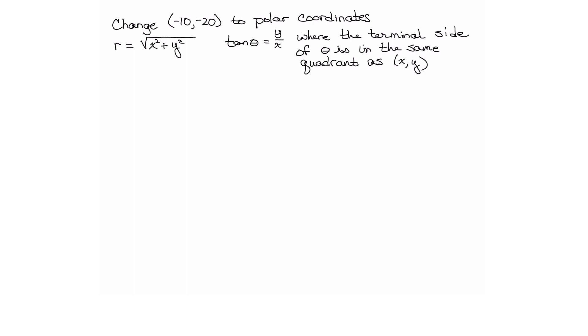Now recall when we want to switch to polar coordinates we're looking at the ordered pair r comma theta, where r equals the square root of x squared plus y squared and the tangent of theta equals y over x.